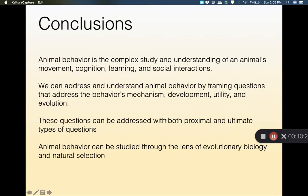So in conclusion, animal behavior is the complex study and understanding of an animal's movement, cognition, learning and social interactions. We can address and understand animal behavior by framing questions that address the behavior's mechanism, development, utility and evolution.